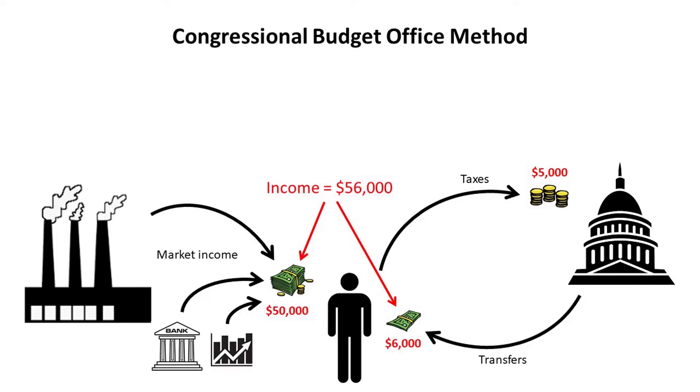So the question is: what is this person's effective federal tax rate? That is, of all the income the person earned, what fraction did the person pay to the IRS? The Congressional Budget Office constructs estimates of effective tax rates by income level. The way the CBO does this is it combines the person's market income — income earned from working, from interest on savings, from capital gains — with the transfers the person has received from the federal government. So from the CBO's perspective, this person's income is $56,000.